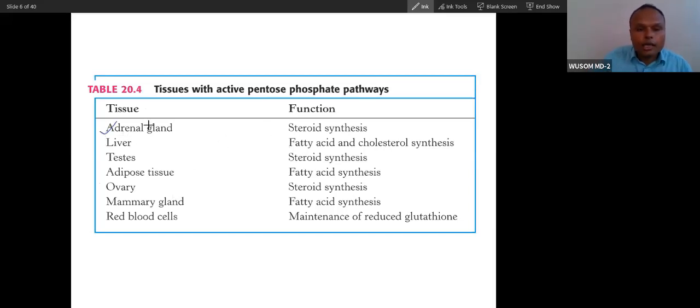You can see these are the tissues where the pentose phosphate pathway will happen. Adrenal gland, I've already told you in liver. What is the function in liver? Fatty acid synthesis and then detoxification also.